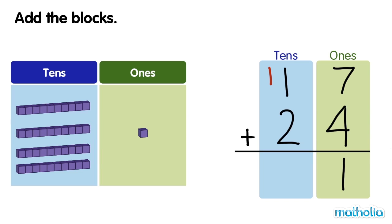Now we can add the tens. 1 ten plus 1 ten plus 2 tens equals 4 tens. There are 41 blocks. 17 plus 24 equals 41.